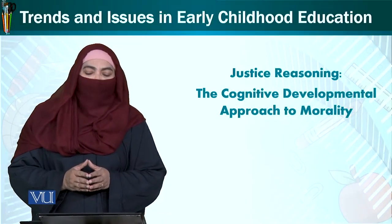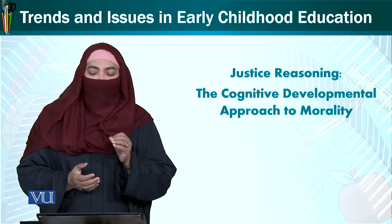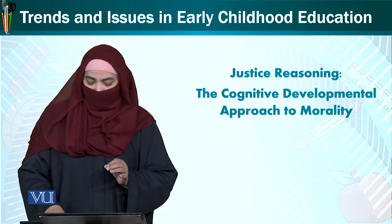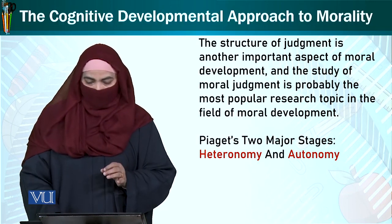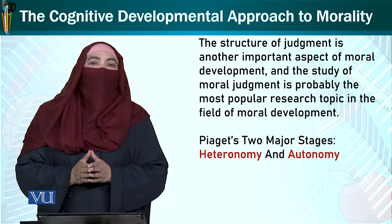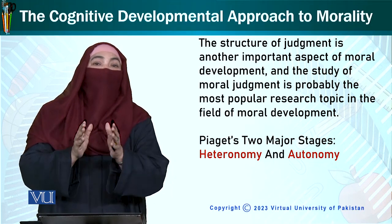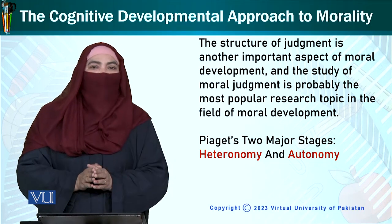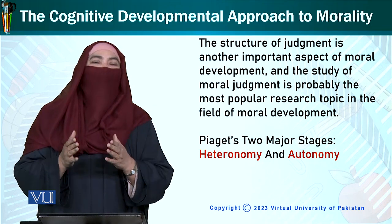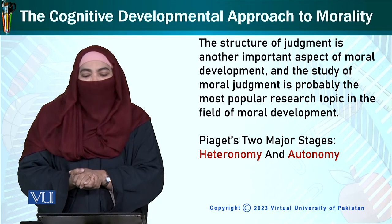Now, we will see justice reasoning, which is the cognitive development approach to morality. Justice reasoning ka matlab ye hai ke aap in saf ke liye khud ko kaise tiyar karte hai, reason kya dete hai. Aapka kya cognitive aisa process hota hai joh aapko in saf par majboor karta hai.